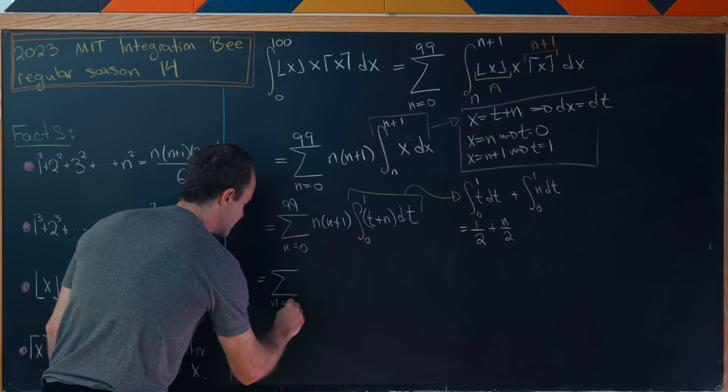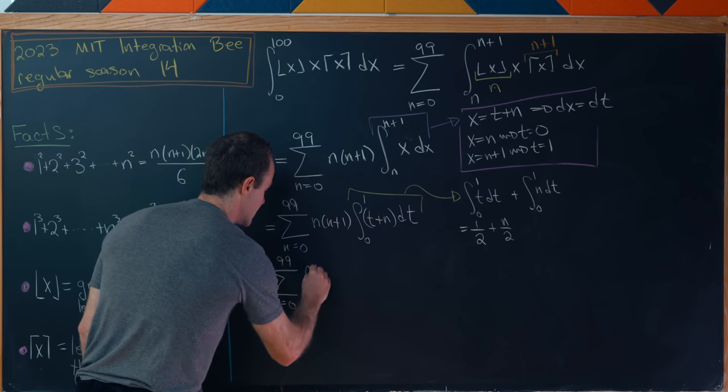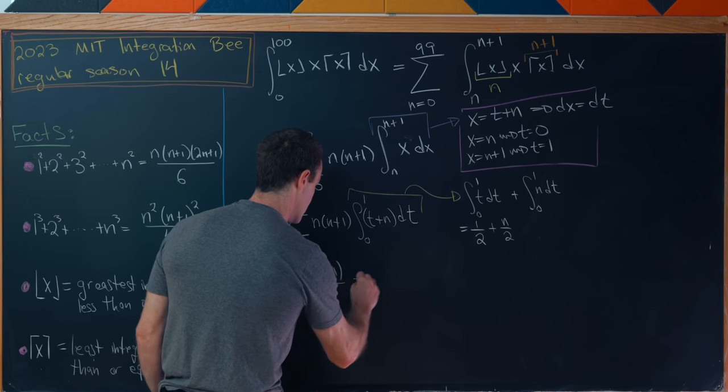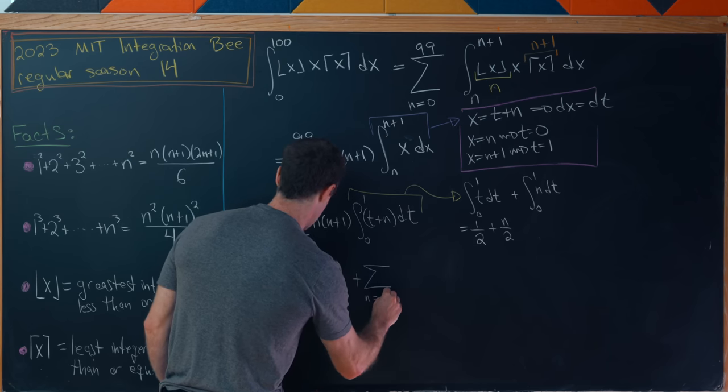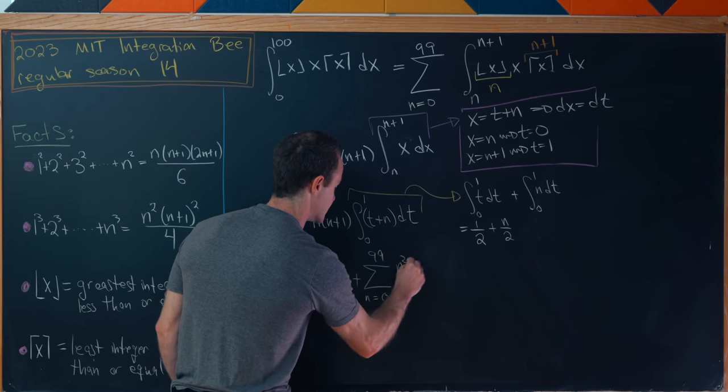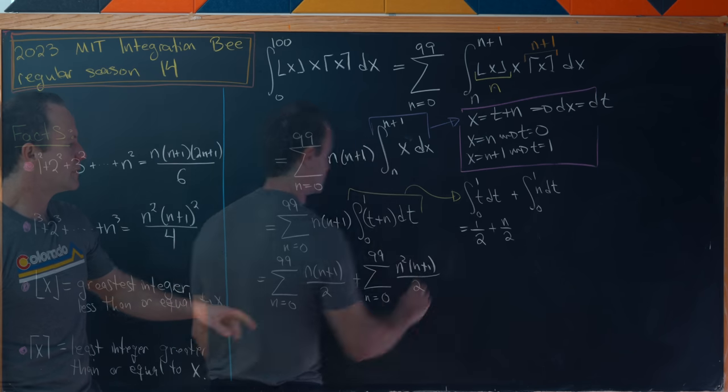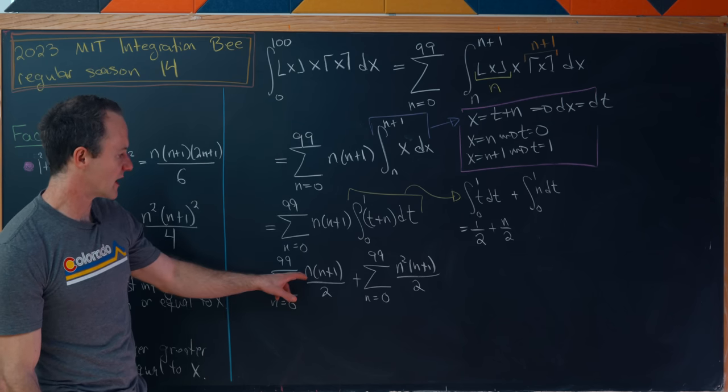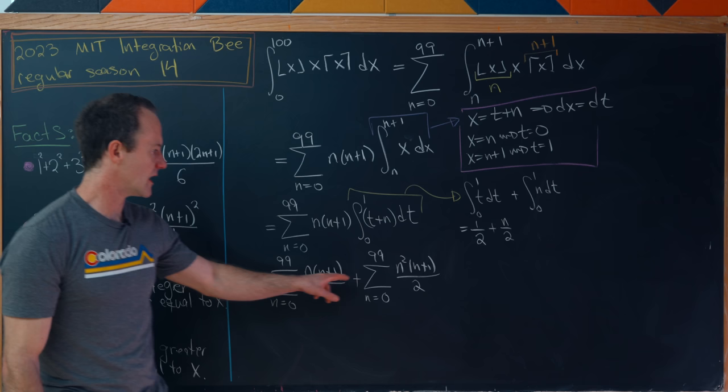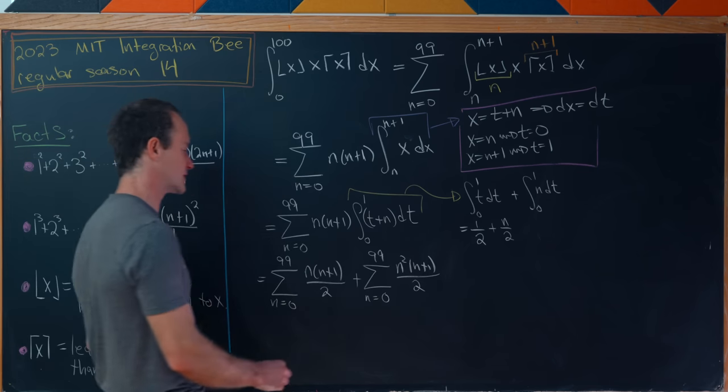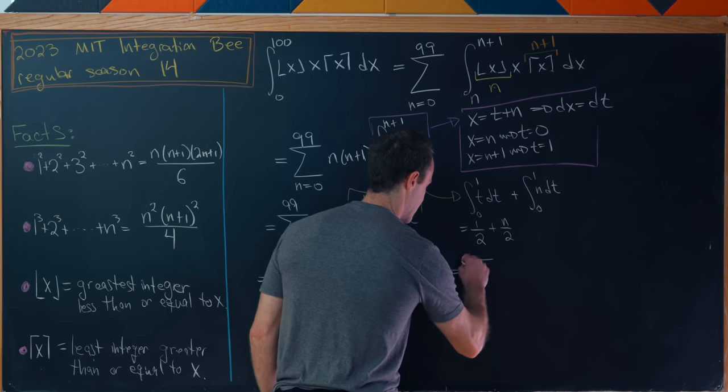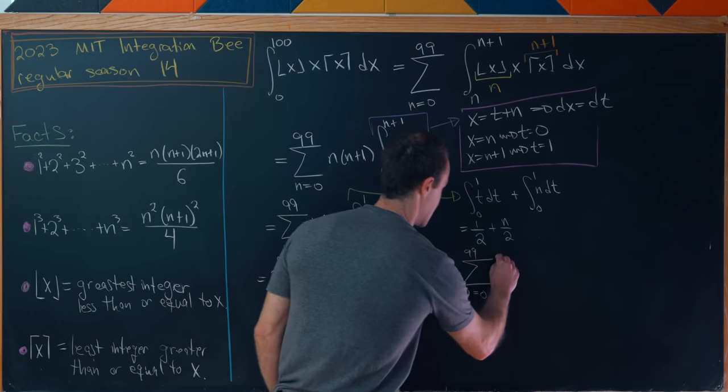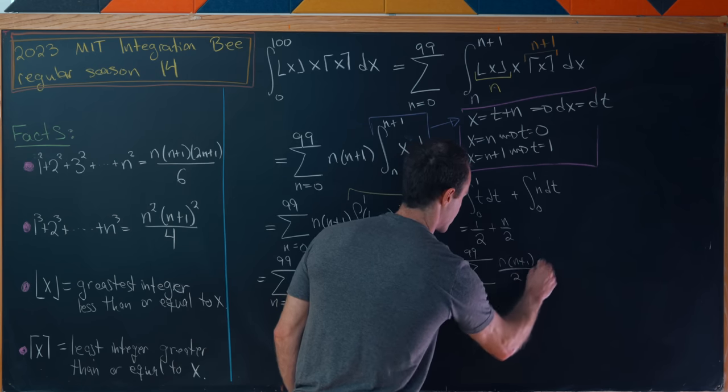And now we can distribute this sum onto both of those and split them up. Onto the half will give us the sum as n goes from 0 to 99 of n times n plus 1 over 2, and then plus the sum as n goes from 0 to 99 of n squared times n plus 1 over 2. But now we've got a greatest common factor in both of these sums. We've got an n times an n plus 1 in both. So we can push these together and factor that greatest common factor out. Maybe we'll factor the half out too.